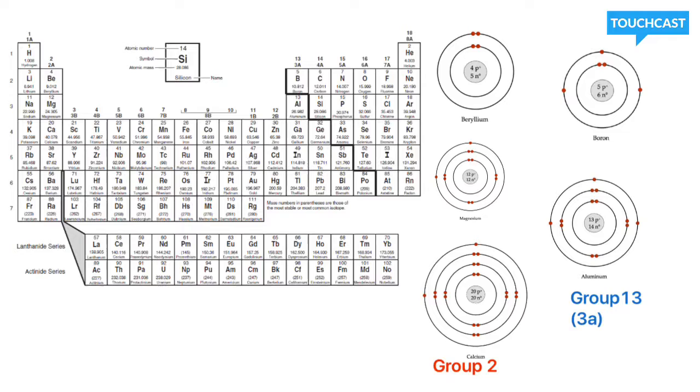Beryllium, right here, only has two valence electrons. Magnesium, as you see, only two electrons in the outside layer. And calcium, also, only two valence electrons.